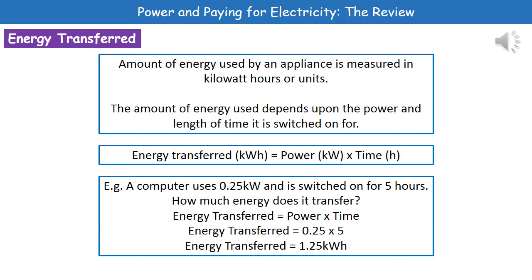To give you an example: a computer uses 0.25 kilowatts and is switched on for five hours — how much energy does it transfer? Flick back to page 2, find your equation: energy transferred is power times time. Substitute in your numbers: power is 0.25, time is 5. So 0.25 times 5 gives you 1.25 kilowatt hours.